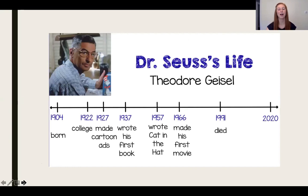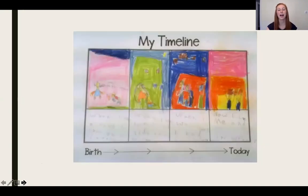We also talked about how we can include the dates or the years to help us know what is happening. So when I look at Dr. Seuss's timeline, I can see that in 1937 he wrote his first book. If the year wasn't on there, I wouldn't know when he wrote his first book, so those are very important to have. We also can add pictures and sentences to help us know what is happening in the timeline — like when this kid made the timeline of his life, he drew a picture and then wrote a sentence about what was happening.